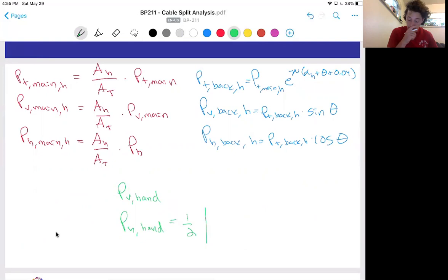Remember, this is the absolute value here for the horizontal forces because they're acting in opposite directions. And we notice this H here refers to the handrail cables.